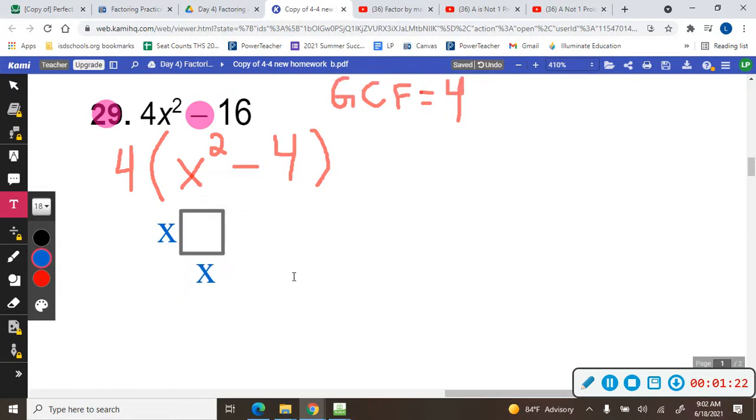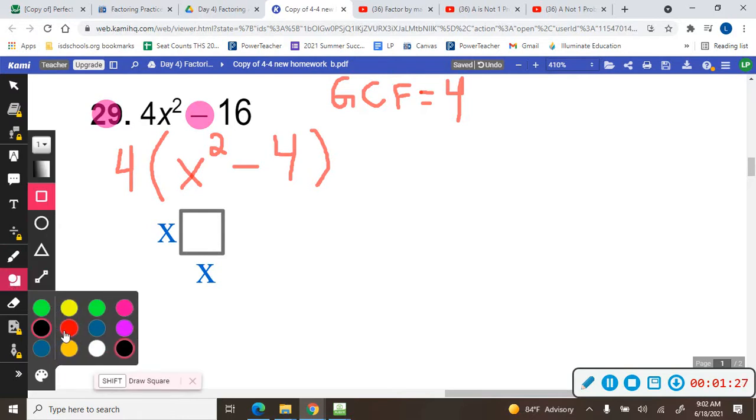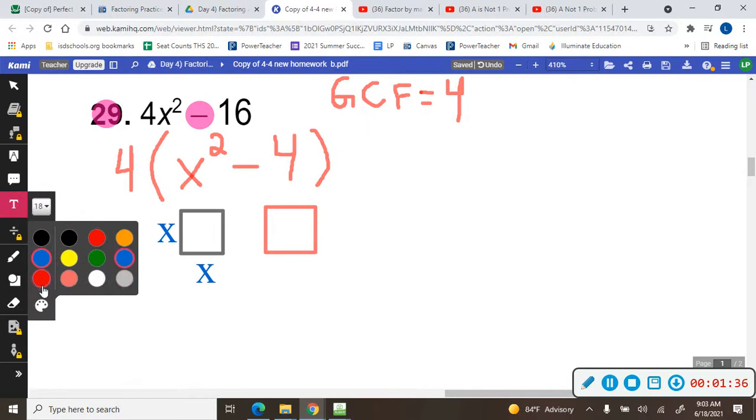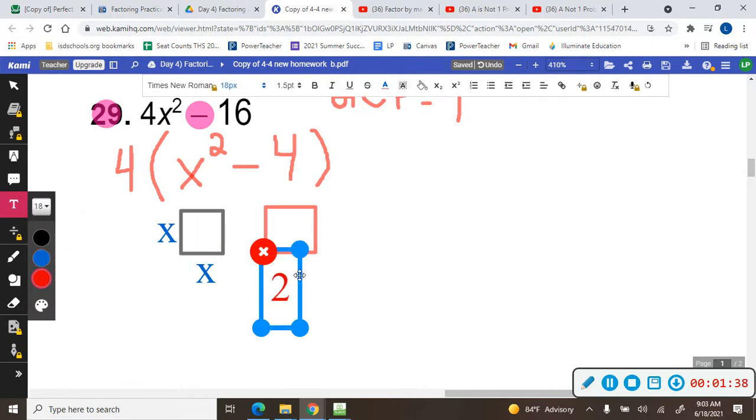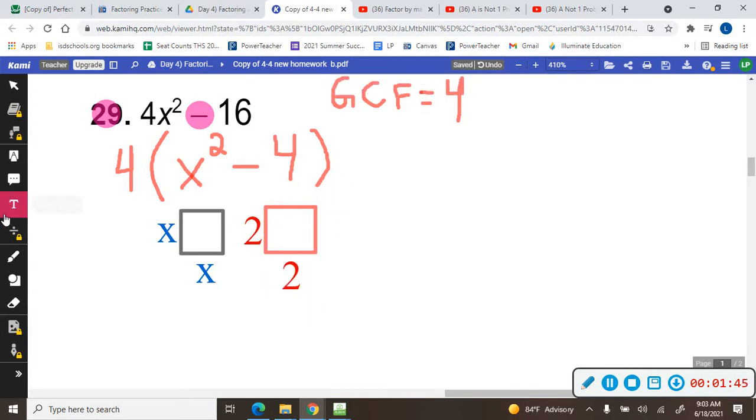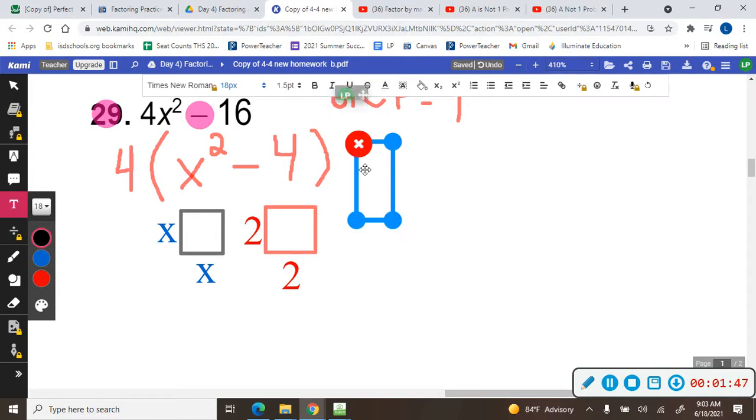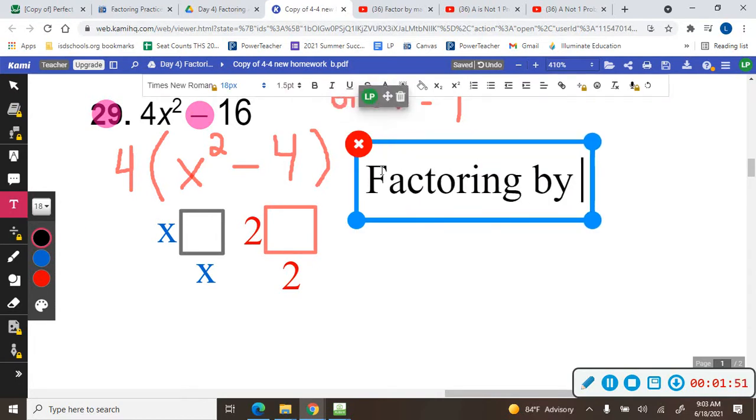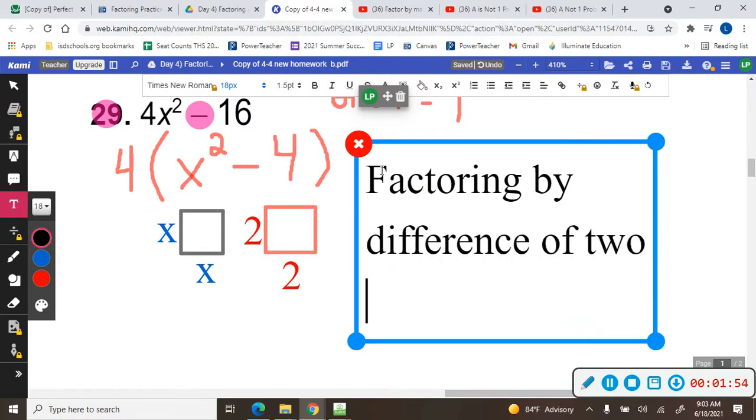Now 4 is also a perfect square. 4 makes a square, 2 by 2. And so we call this process factoring by difference of two squares.